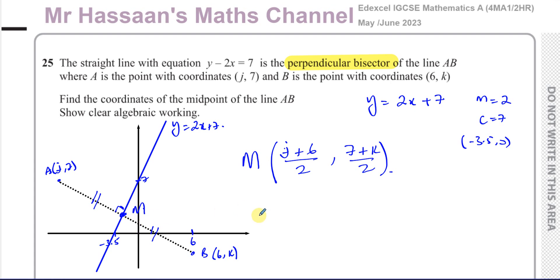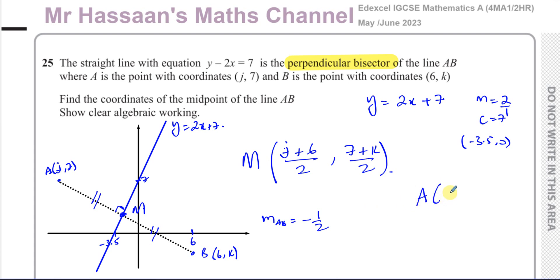The second thing we know is that the gradient — which I'll call small m — the gradient of the line AB is going to be the negative reciprocal of the gradient of the line we're given, Y equals 2X plus 7. So the gradient of AB is going to be the negative reciprocal: you change its sign and turn it upside down. Remember, 2 is like 2 over 1, so it becomes negative 1/2. So point A has coordinates J7 and B has coordinates 6K, as we're told.